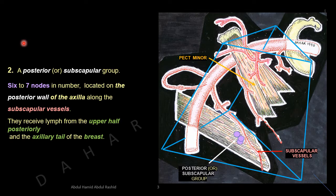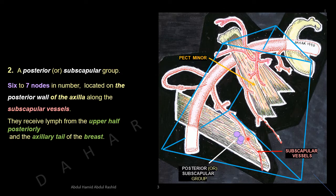Number two: the posterior or subscapular group. In the anterior view of the right axilla, the posterior or subscapular group includes about six to seven nodes located on the posterior wall of the axilla along the subscapular vessels. These nodes receive lymph from the upper half of the back and the axillary tail of the breast.